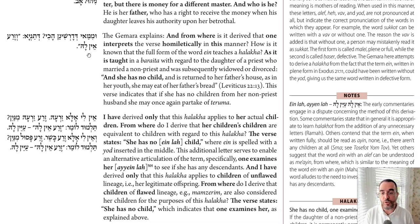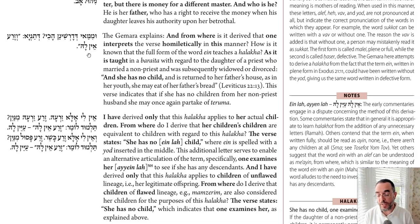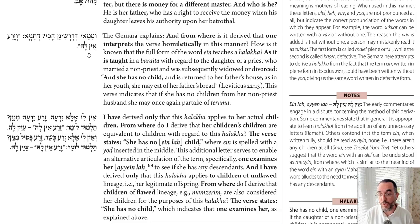If they get divorced or he dies, and she has no children from that marriage, she goes back to her father's house and can again eat Terumah. However, that's only true if V'Zera En La — if she has no children. If she has a child from that non-Kohen, she remains connected to the husband through their child, and therefore she cannot eat Terumah, because she doesn't really go back to her father's house.